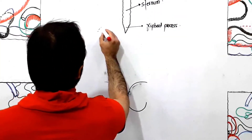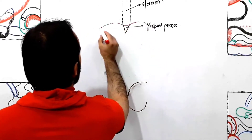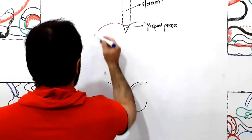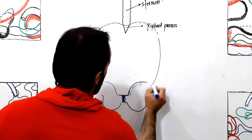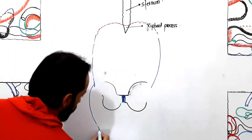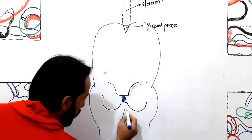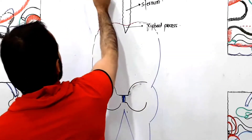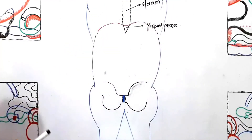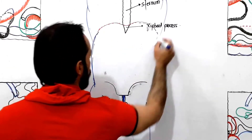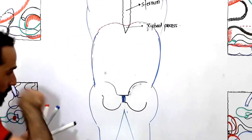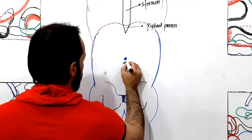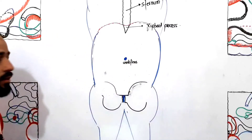Here is our diaphragm. Below the diaphragm there is your abdominal cavity and above the diaphragm there is your thoracic cavity. Now look carefully — this is the abdominal cavity and above is the thoracic cavity. Here will be the umbilicus of our figure.